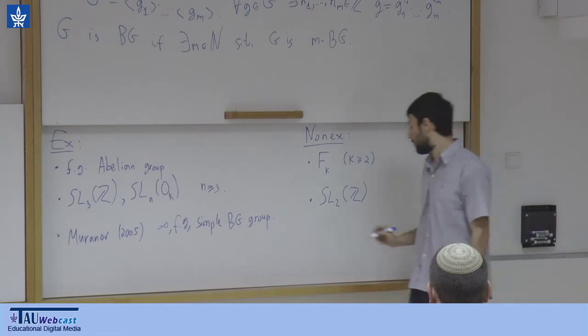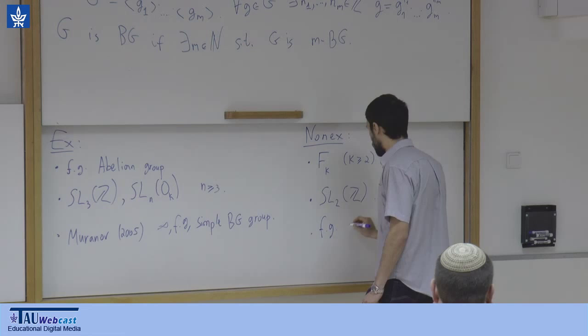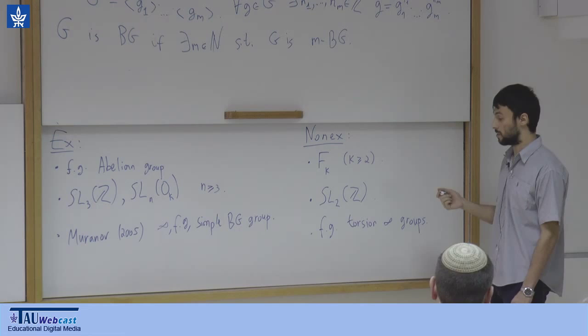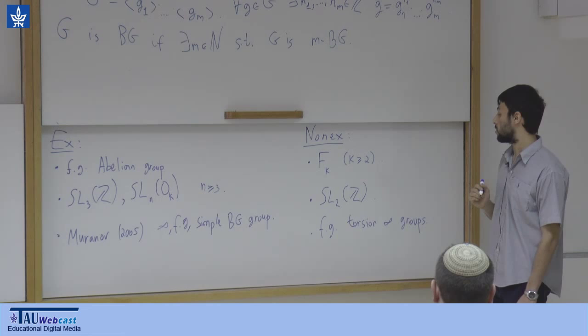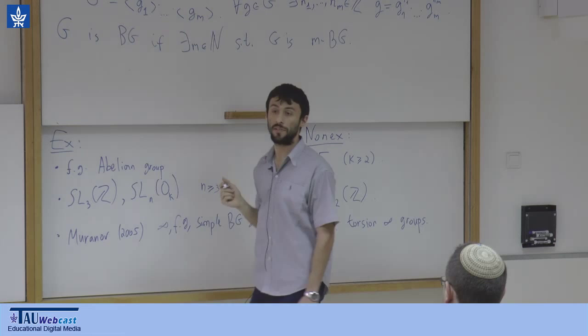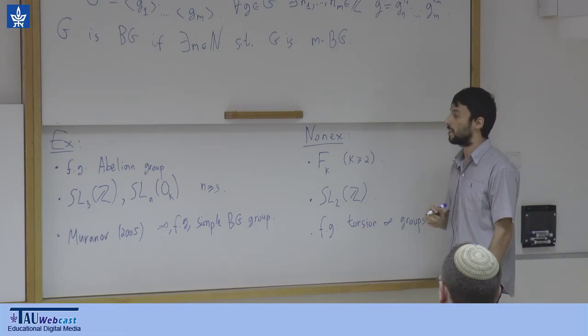Another exotic non-example is that of finitely generated torsion infinite groups — such groups exist by non-trivial constructions, some due to Alexander Olshansky. In such a group every cyclic subgroup has finite order, so the product as a set will be a finite set, and we cannot cover the whole infinite group G. So these are also non-examples.